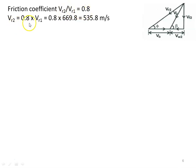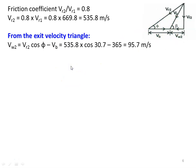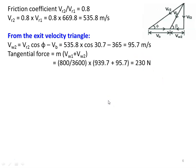Friction coefficient VR2/VR1 is given as 0.8, so VR2 equals 0.8 into 669.8, equal to 535.8 meters per second. From the exit velocity triangle, VW2 equals VR2 cos β minus VB, substituting 535.8 into cos 30.7 minus 365, equal to 95.7 meters per second. Tangential force equals M into (VW1 plus VW2), which is (800/3600) into (939.7 plus 95.7), equal to 230 Newtons.